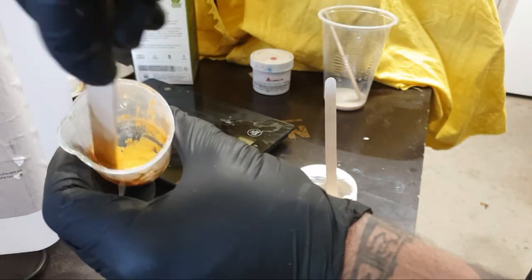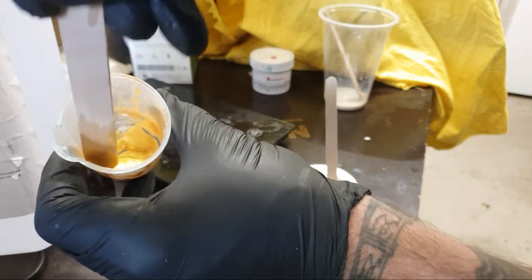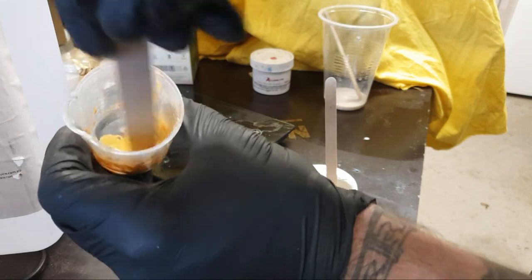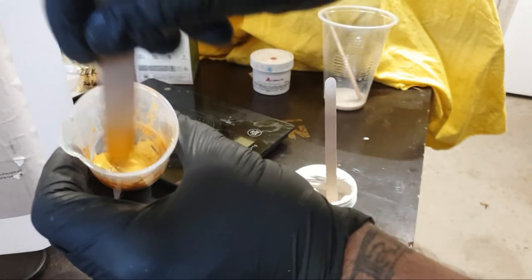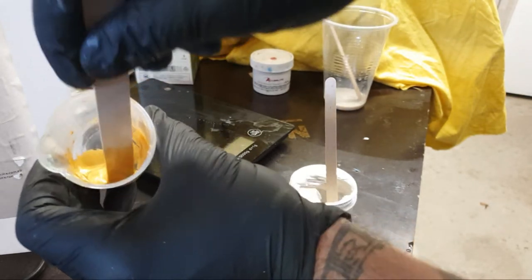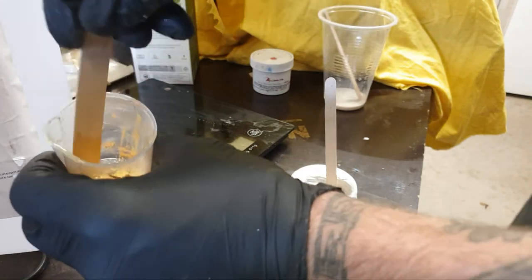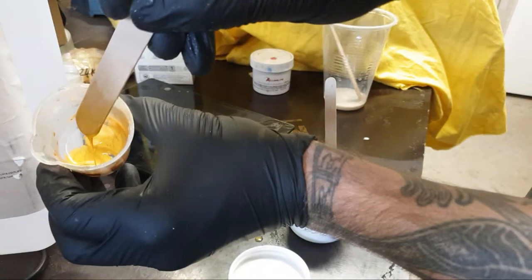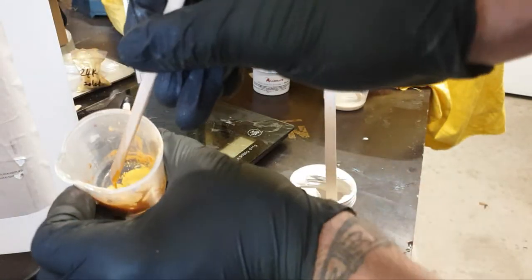I just mix that together until it becomes one sort of cohesive consistency, no lumps, nothing that are going to cause issues later. Nice thing about this also is if you want to get some nice streaks in a clear resin or another color, doing all this highly concentrated, when you put it into your other resins, you can get it so it's got beautiful, heavy gold or whatever color you're choosing with this mica powder. You can choose to have streaks running through the clear resin.